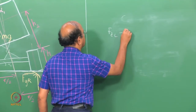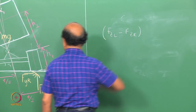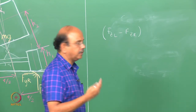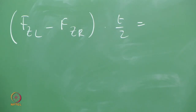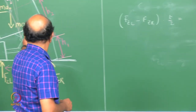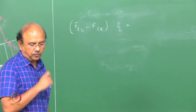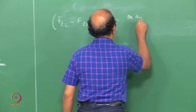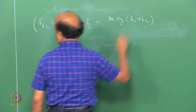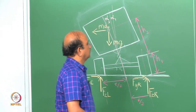Taking the moment at the center: F_right into T/2 equals the moment due to m·a_y and m·g. Note that h_1 and h_2 are the respective heights, and we are talking about small alpha_1 and alpha_2. So we write: m·a_y·(h_1 + h_2), which acts in the anticlockwise direction.